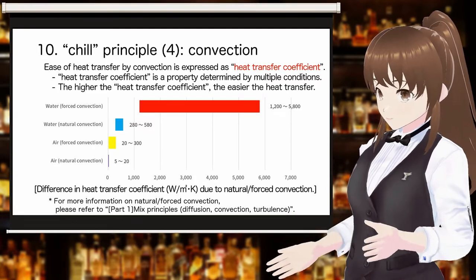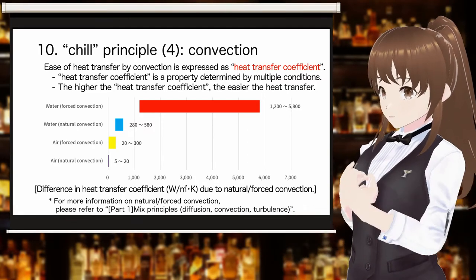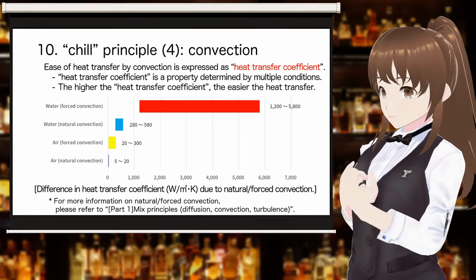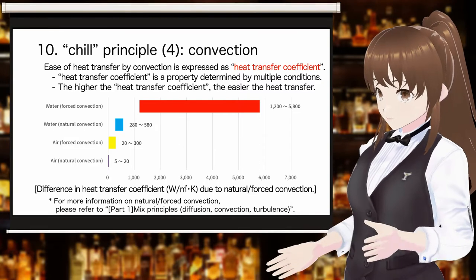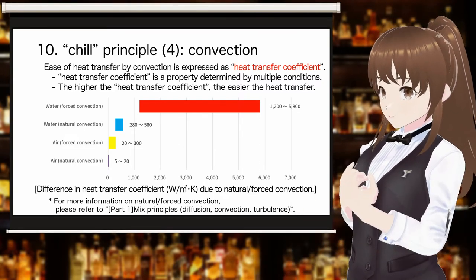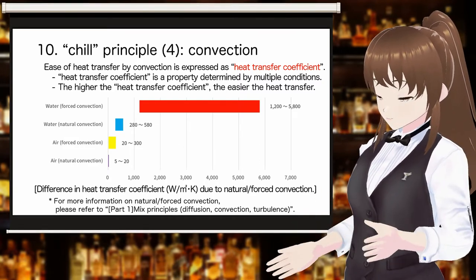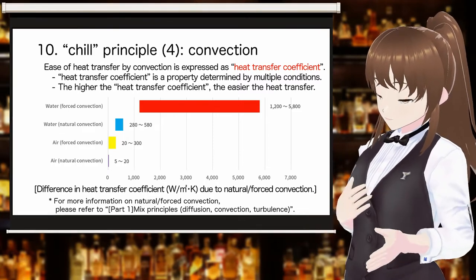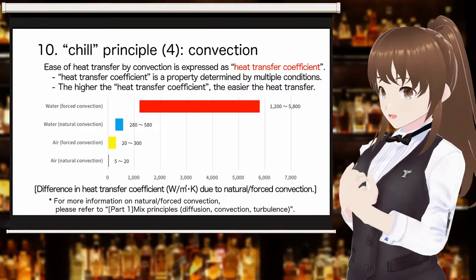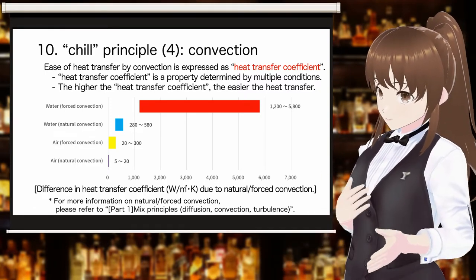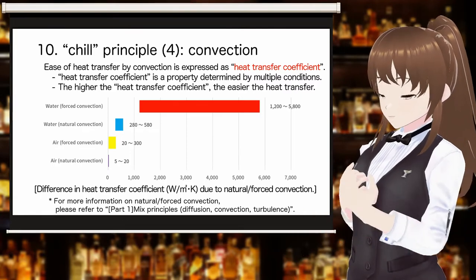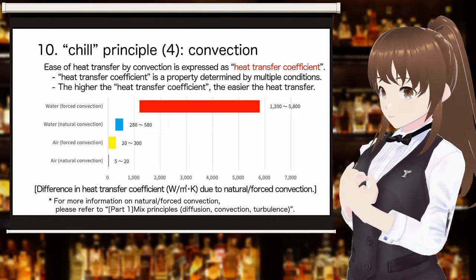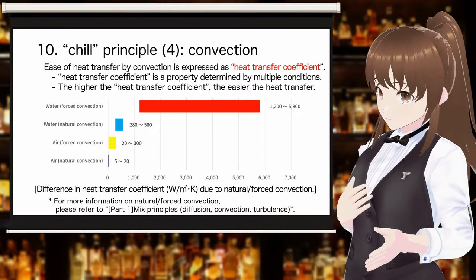The ease of heat transfer in a fluid is expressed by the heat transfer coefficient. The heat transfer coefficient varies with multiple conditions, meaning it can be controlled by shaking techniques and methods. The higher the heat transfer coefficient, the easier heat is transferred. A bar graph shows the heat transfer coefficients of water and air, confirming that there is a wide range of heat transfer coefficients even for the same substance.